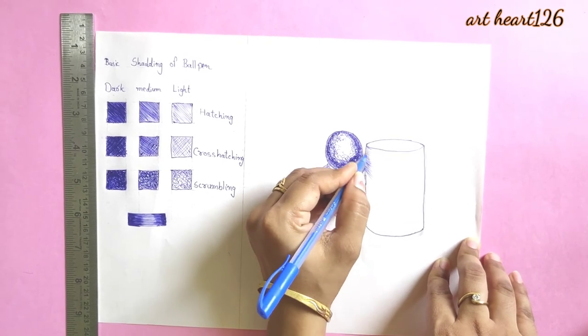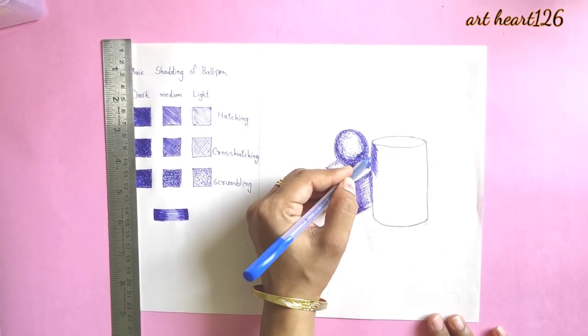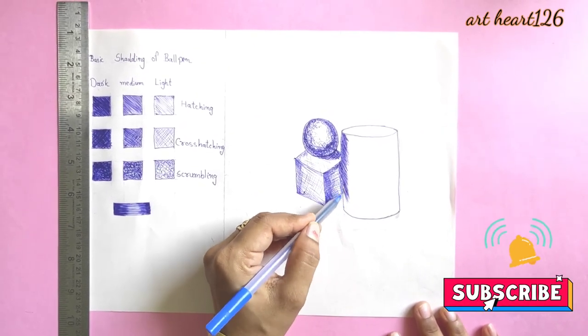It's cross hatching in cylinder. Use dark tone then light tone. You have to work as your object or drawing required.